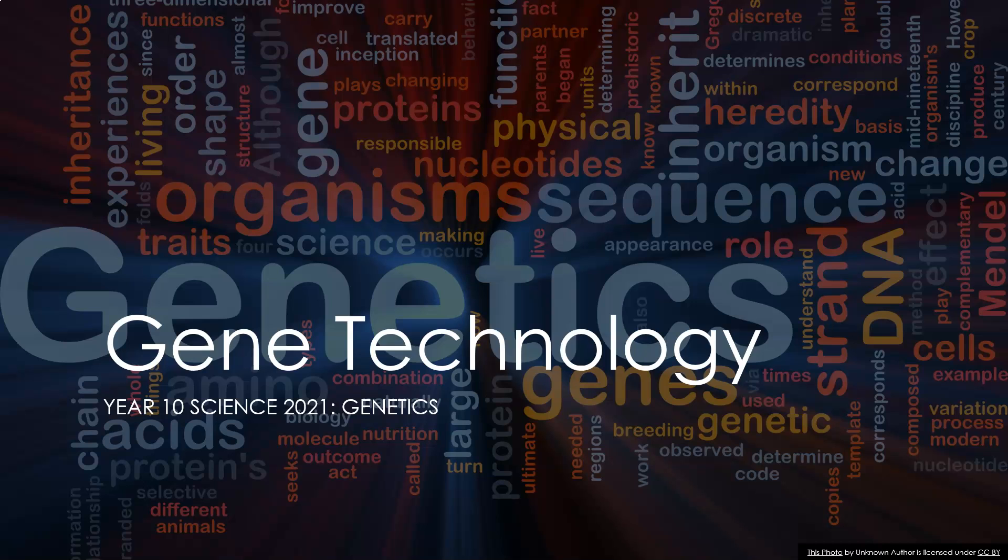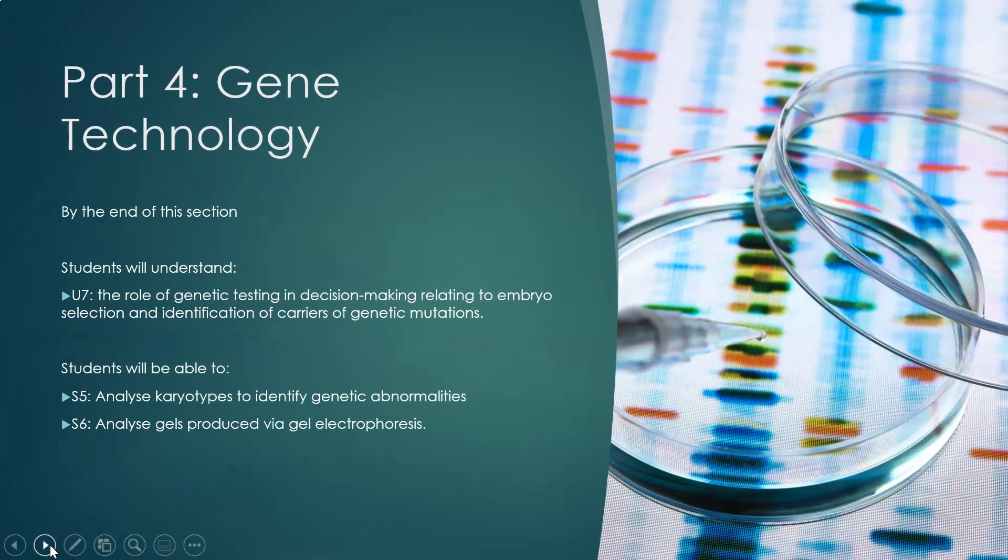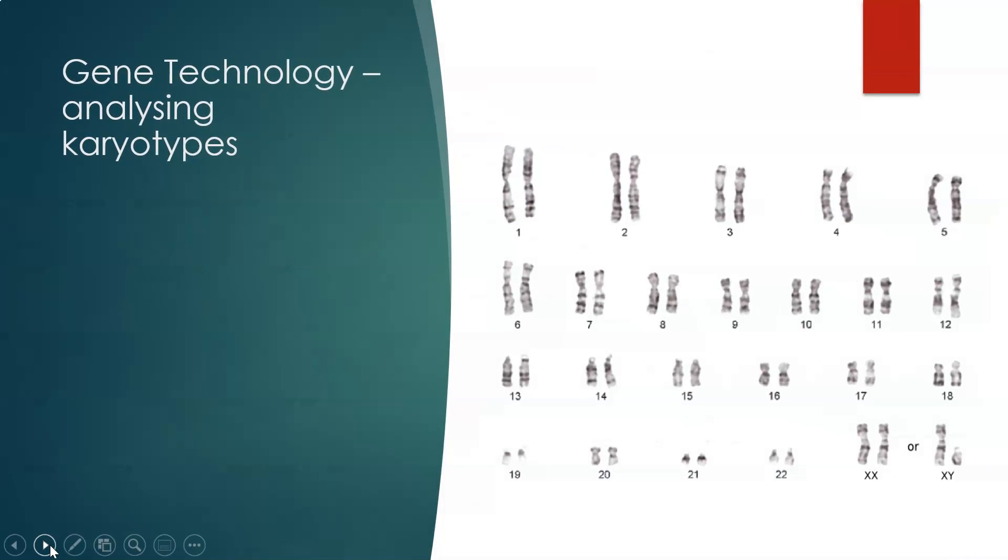Welcome to a Year 10 Science Genetics video on gene technology. When we're looking at gene technology, we are analyzing karyotypes. Karyotypes are the representation of the chromosomes aligned in size order from largest at number one down to smallest, in the case of human karyotypes 22, then with the sex chromosomes.